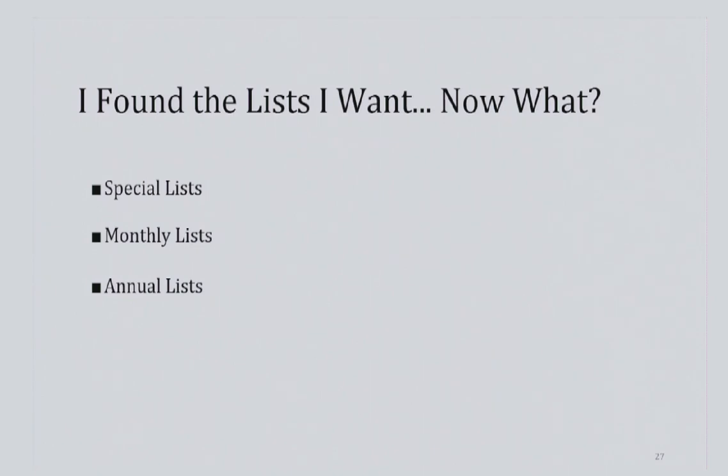Once you've found the list you want — whether on microfilm, online, or in person — you will want to know what exactly you are looking at. The tax laws of 1862, much like tax laws of today, were very complicated. As such, the records are somewhat complicated as well. When you get down to the division, the records are further broken up into special lists, monthly lists, and annual lists.